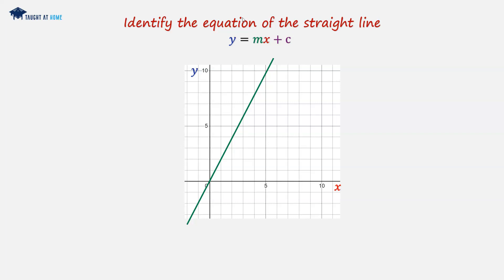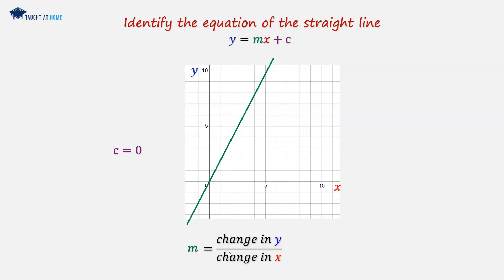First, what is the c value? Well, because it goes through the origin, c is equal to 0. Now we have to find m. To find m, we use the gradient equation: it's the change in y over the change in x. So we need to find two y values and two x values — we need to pick two points. The first point can just be the one at the origin.